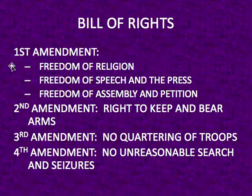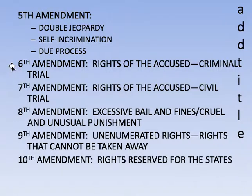The Bill of Rights: the First Amendment covers freedom of religion, speech, and press. The Second Amendment is the right to bear arms. The Third Amendment addresses no quartering of troops. The Fourth Amendment covers unreasonable searches and seizures. The Fifth Amendment covers double jeopardy and the right not to speak at your own trial. The Sixth Amendment covers rights in a criminal trial. The Seventh Amendment covers rights in a civil trial. The Eighth Amendment prohibits excessive bail, fines, and cruel and unusual punishment. The Ninth Amendment covers unenumerated rights that cannot be taken away. The Tenth Amendment reserves all other rights to the states.